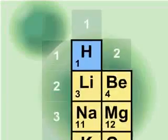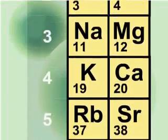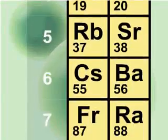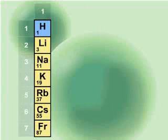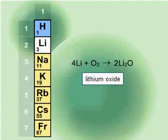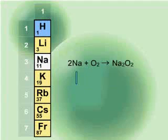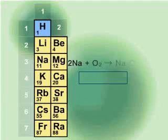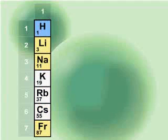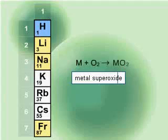Group one and two metals react with oxygen to give a variety of products depending on which metal is used. Atmospheric oxygen reacts with lithium to give lithium oxide Li2O, with sodium to produce the peroxide Na2O2, while the remaining metals potassium, rubidium and cesium form superoxides, MO2.